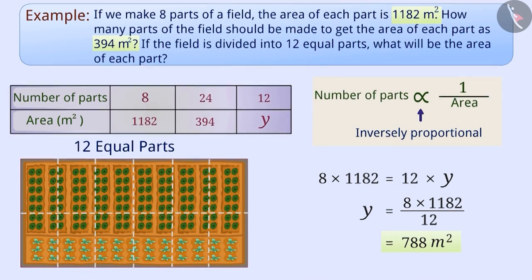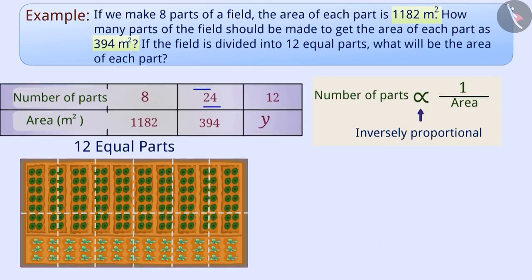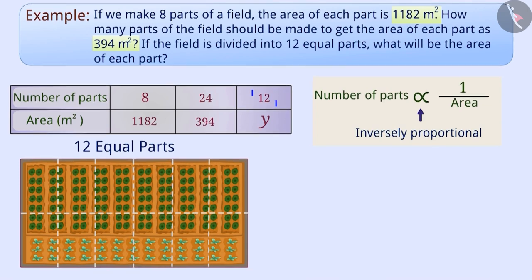You can find this result easily by looking at the table. Looking at the second and third position in the table, we find that the number of parts is half. So, the area under the inverse proportionality will be double. That is, when the number of parts is 12, then the area will be 2 × 394 m² = 788 m².